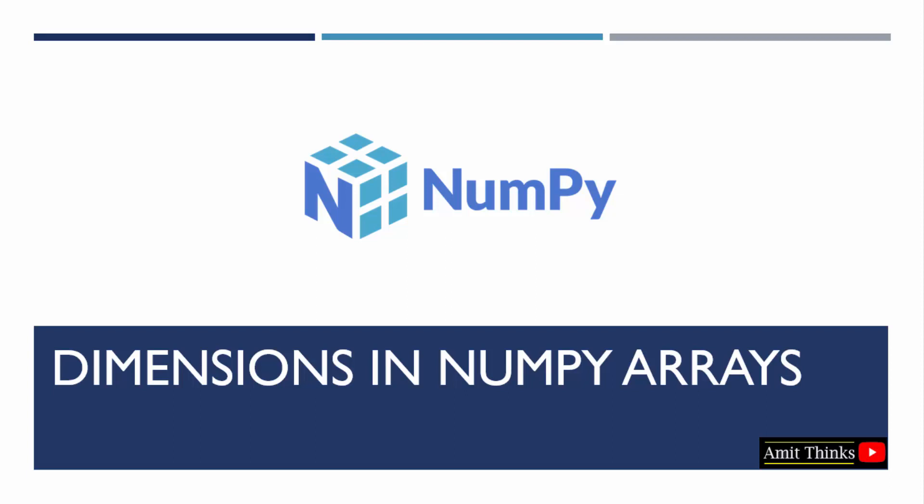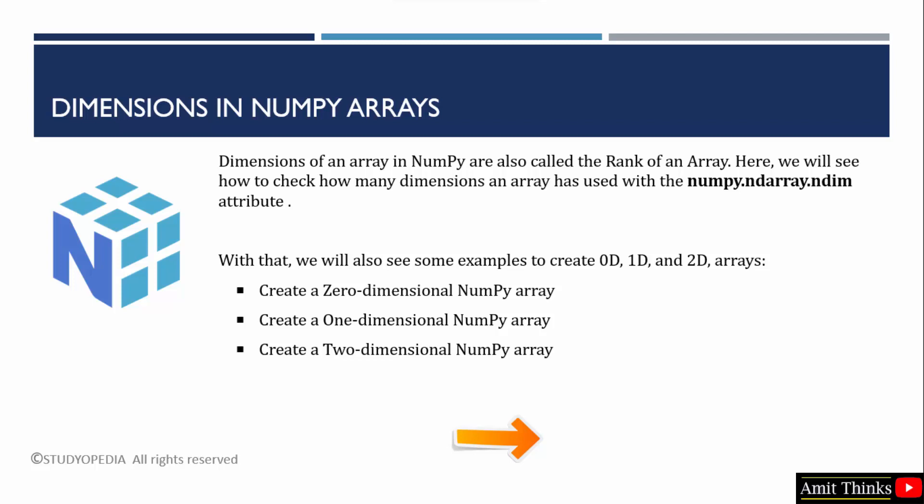In this video, we will learn what dimensions are in NumPy arrays, with some examples. The dimensions in an array are also called the rank of an array. An array can have zero dimension, one dimension, or it can be a multi-dimensional array with two, three, or more dimensions. To check how many dimensions an array has, we use the ndim attribute.